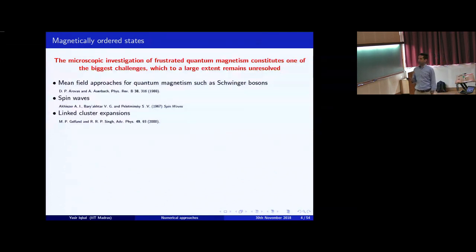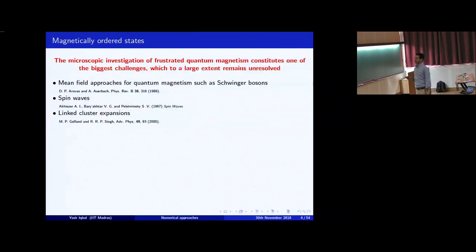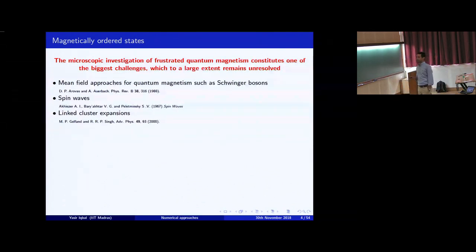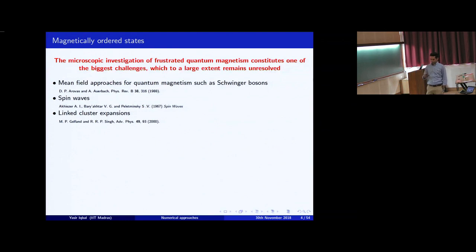Traditionally, in the 80s, people applied a lot of mean field approaches for quantum magnetism, such as Schwinger bosons. This approach, for example in 3D, is good at capturing magnetic order, but tends not to capture paramagnetic phases to a very good degree of accuracy. When you add fluctuations beyond mean field, the information you get about a quantum paramagnet can get drastically altered.